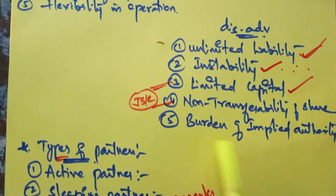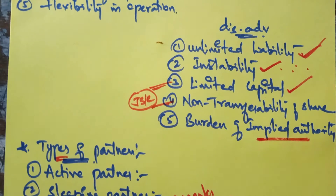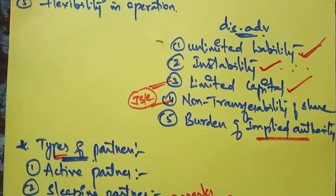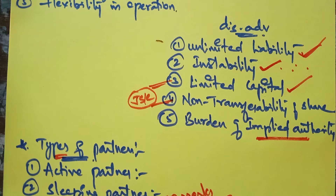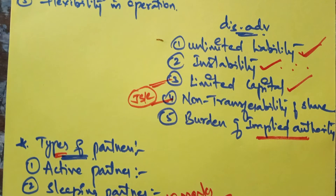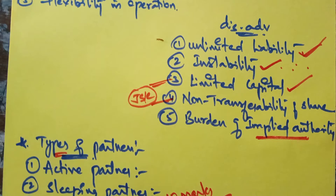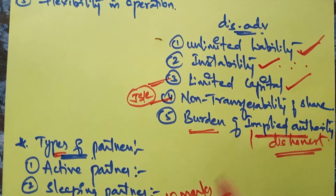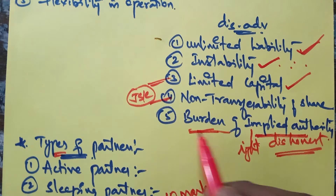The last disadvantage is the burden of implied authority, generally exercised by the active partner. Implied authority means you have rights to perform operations in the bona fide interest of the firm — like issuing cheques, accepting bills, employing or expelling employees, opening a bank account in the name of the firm. Your actions bind the other partners. The disadvantage is that a dishonest partner may misuse this authority.